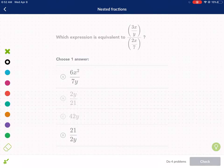So let's go ahead and get started. Here we're asked which expression is equivalent to 3x divided by 9 divided by 2x divided by 7. One thing to keep in mind is you can think of this as the divide sign.